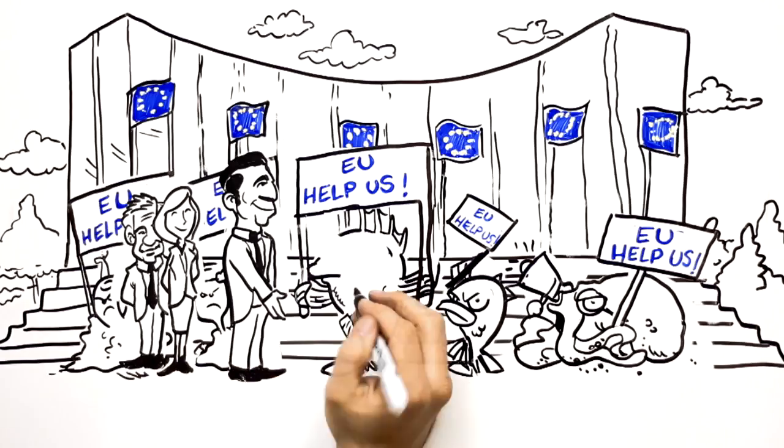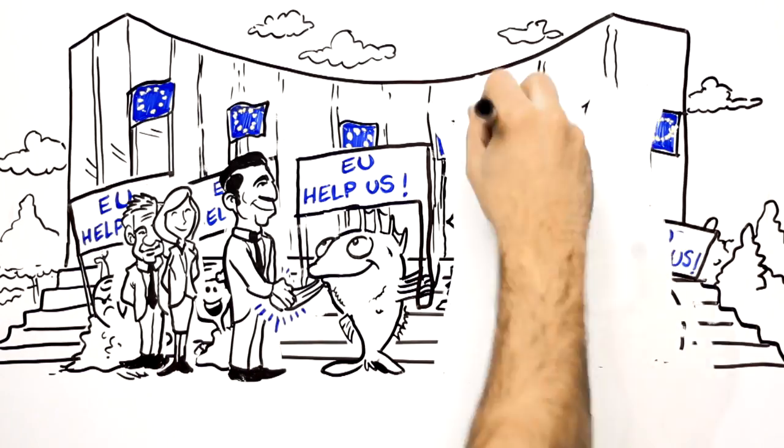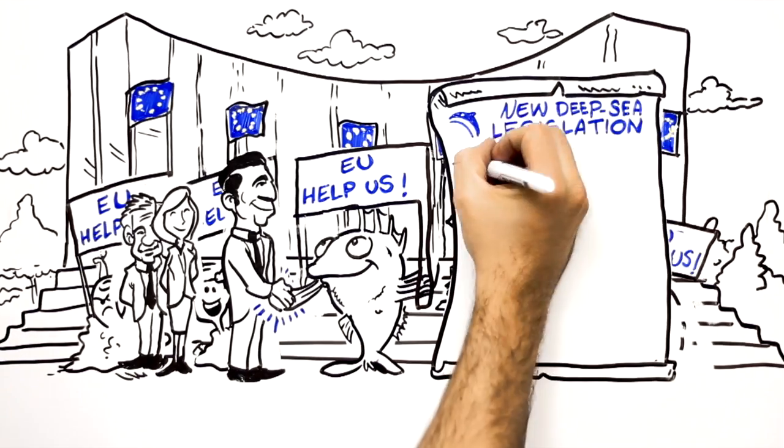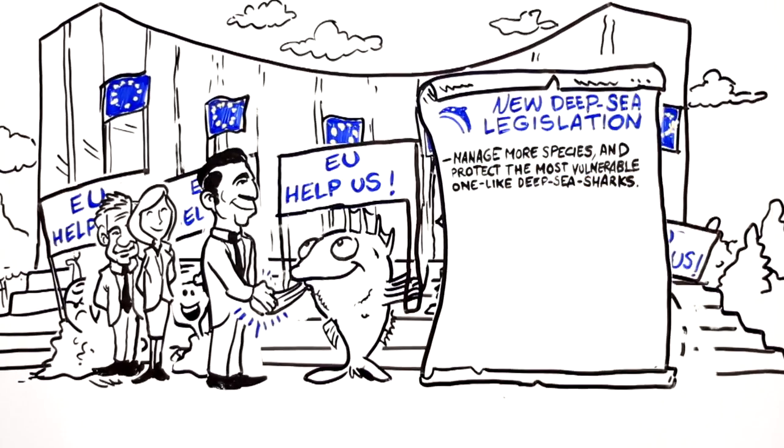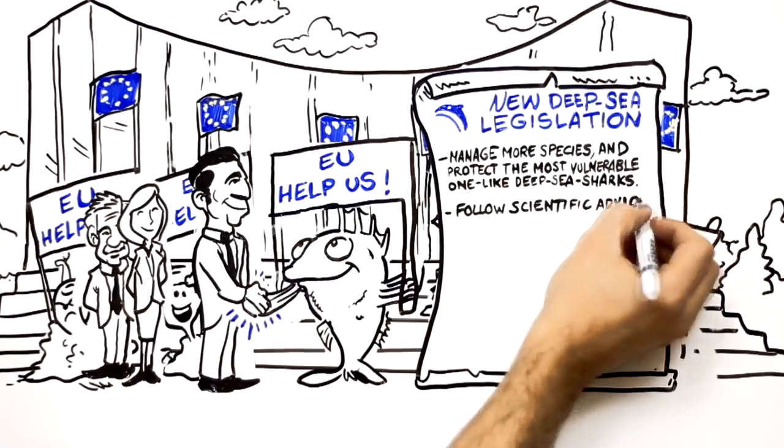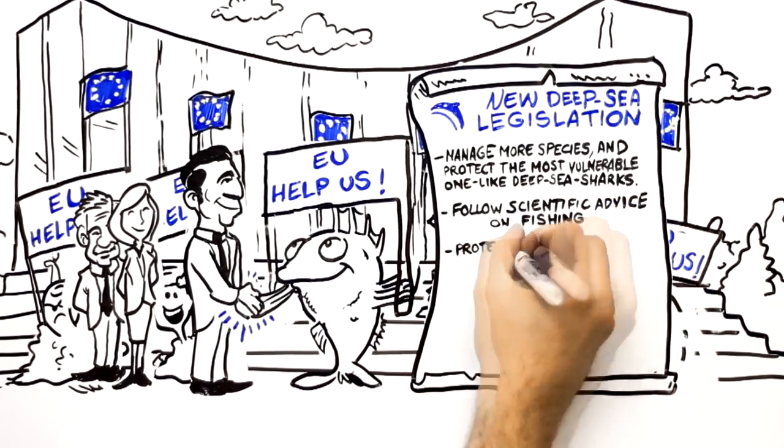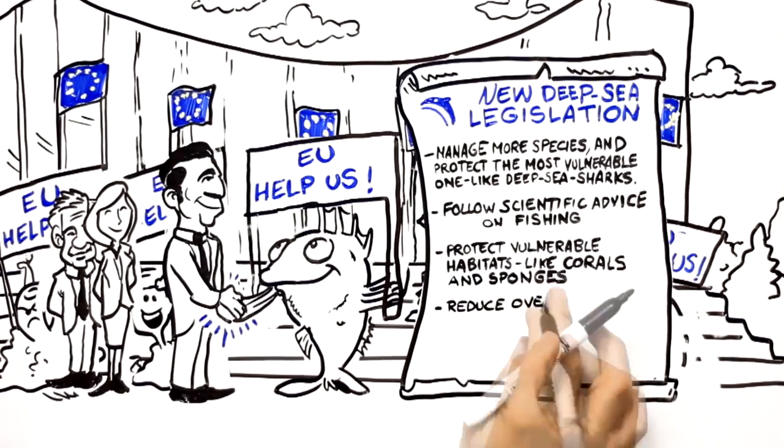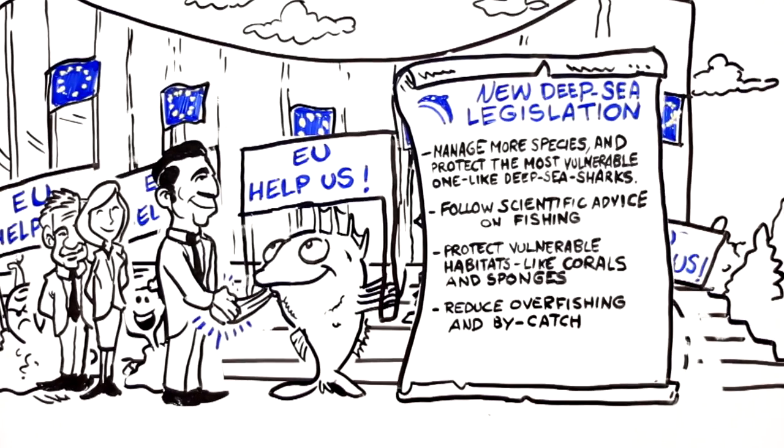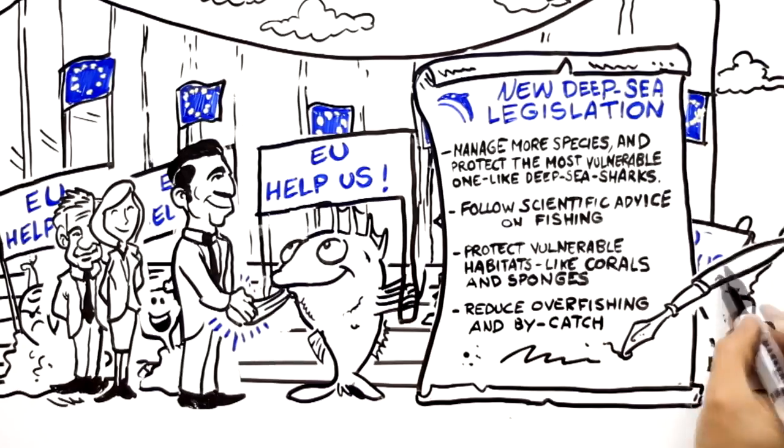Please manage more species and protect the most vulnerable ones like deep sea sharks. Follow scientific advice on fishing. Protect vulnerable habitats like corals and sponges. Reduce overfishing and bycatch. Stand up for the deep sea.